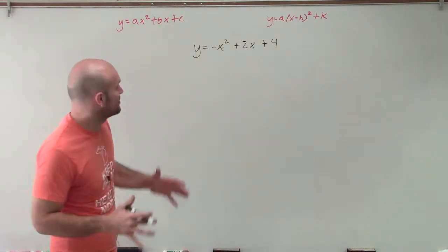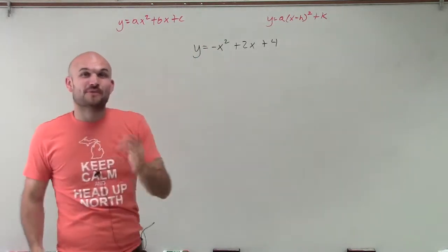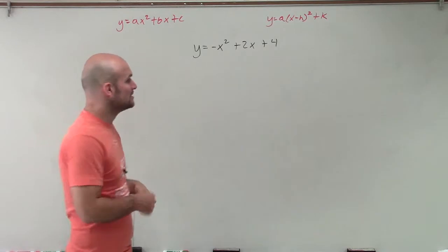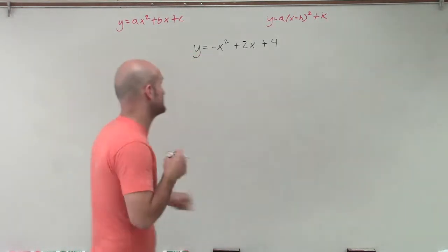So the main important thing when completing the square, we've got to make sure that our a is equal to a positive 1. And we have a problem here because we have a negative 1. So even though it's still 1, but it's negative, so we've got to make sure we factor it out.